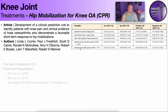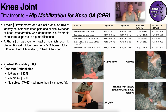Ipsilateral hip medial or internal rotation passive range of motion less than 17 degrees; and ipsilateral knee flexion passive range of motion less than 122 degrees. In general, these criteria were chosen because they have both the highest specificities and the highest sensitivities.